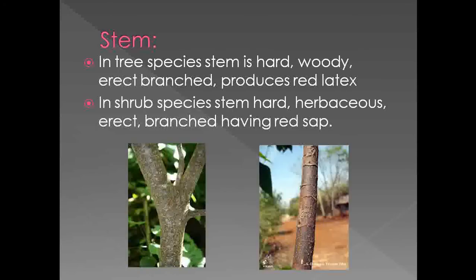The stem observed under this family — since the members are either tree species or shrub species — the stem is hard, woody, erect, cylindrical, branched, and produces red latex. For the tree species the stem is hard, woody, erect, branched and produces red latex. For the shrubby species, the stem is hard, somewhat herbaceous, erect, branched and produces red latex or has red sap. This is the description of the stem observed in the family Bixaceae.